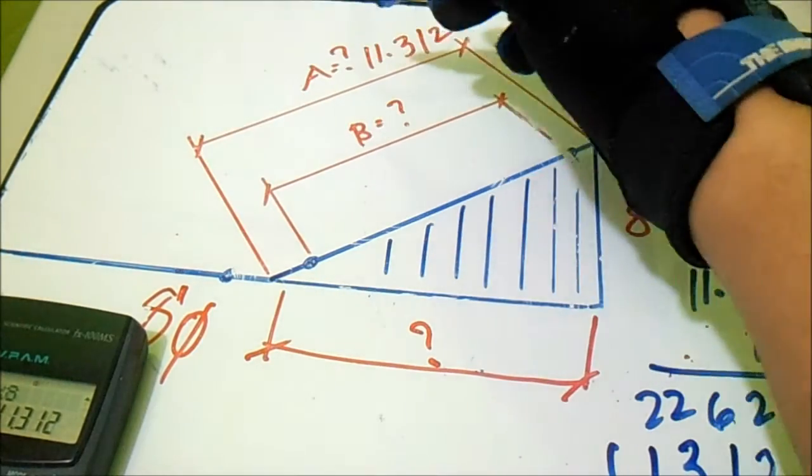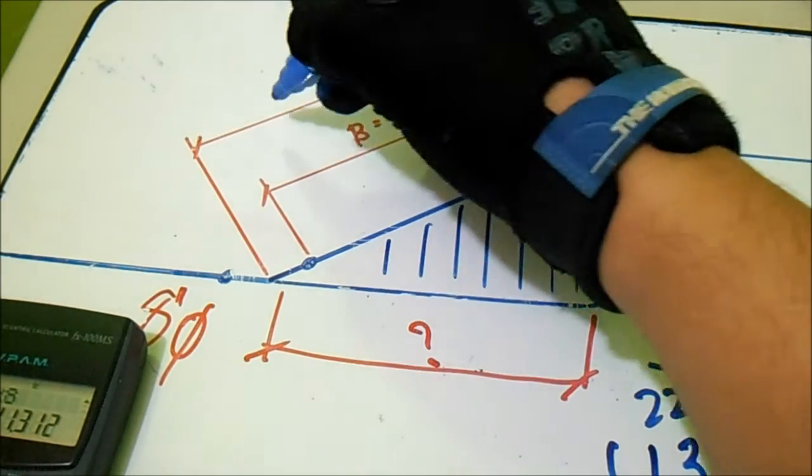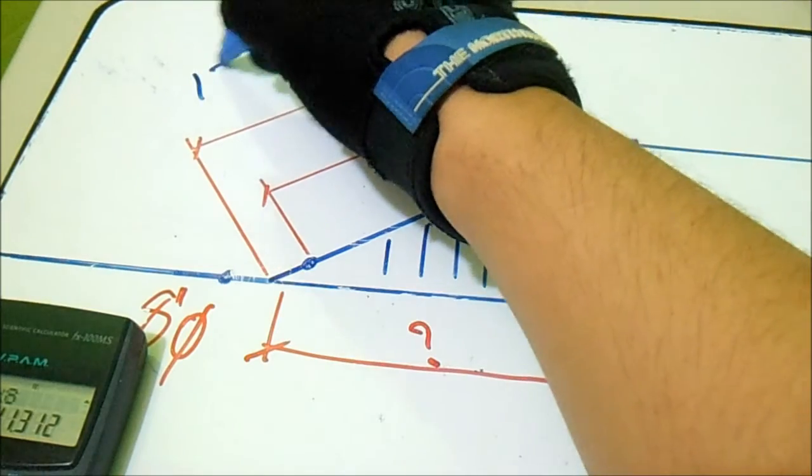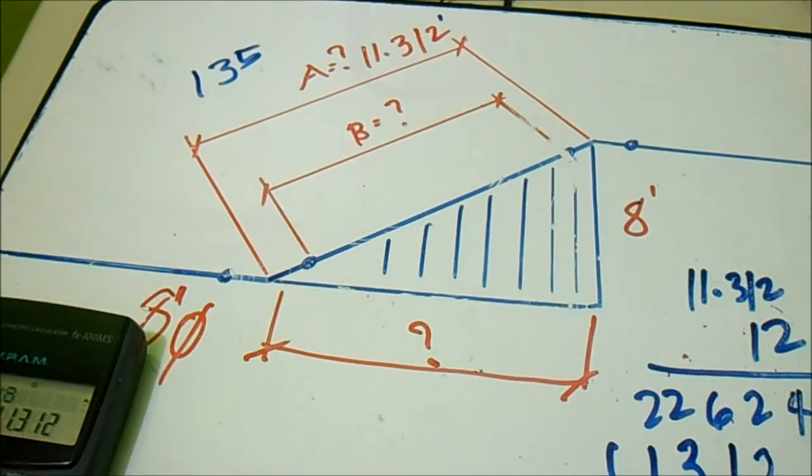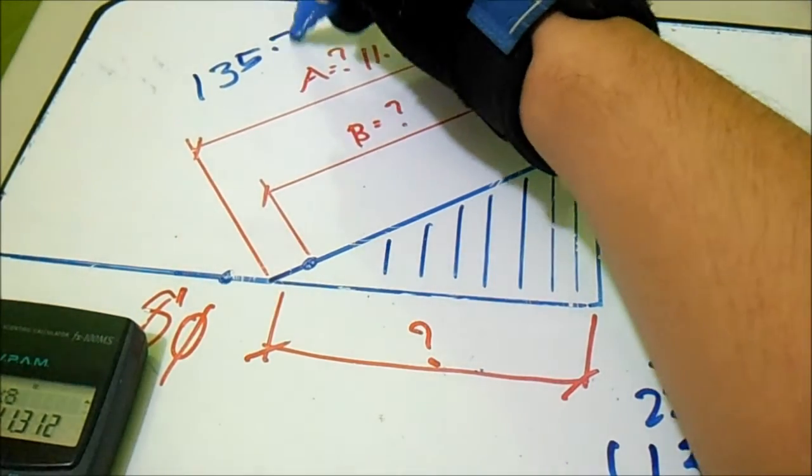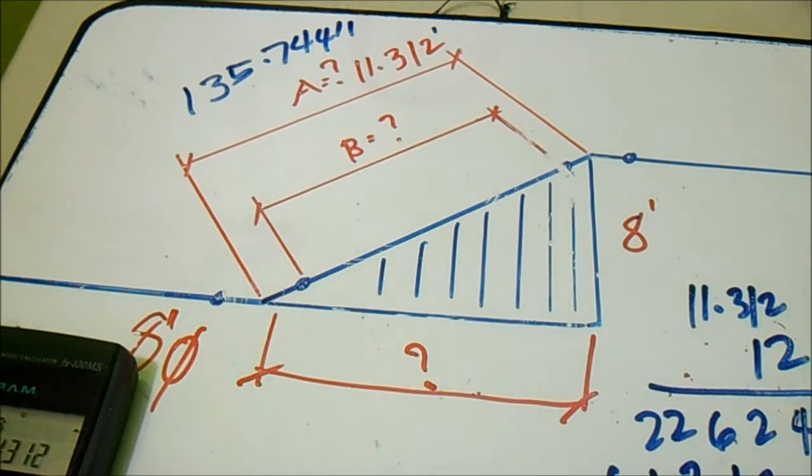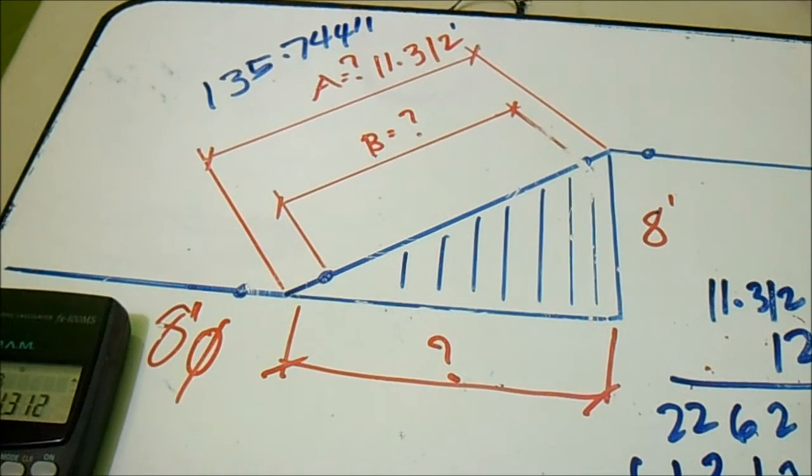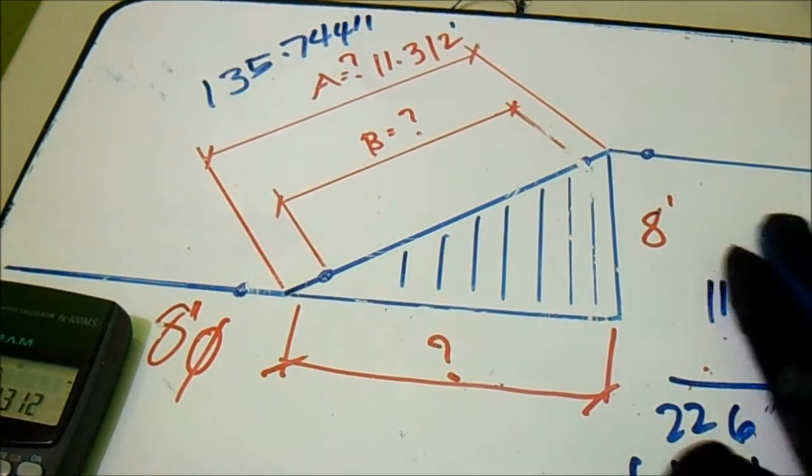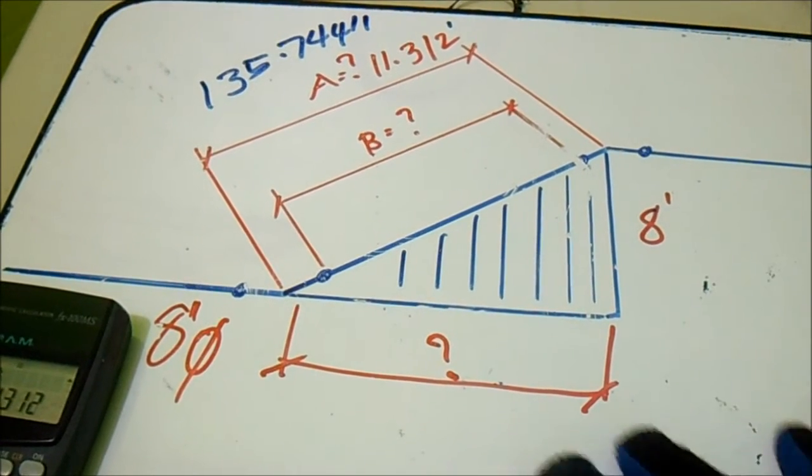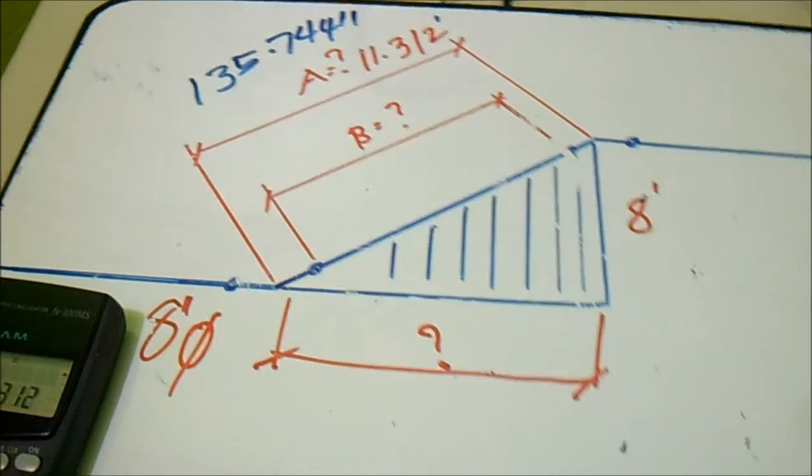This is feet and this is 135.744, this is inches. Let's find the takeoff. Our formula for 45 degree elbow is 0.625.